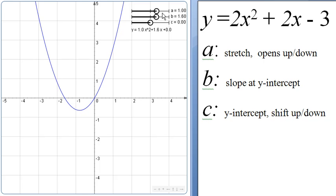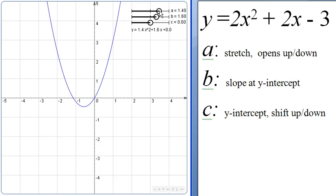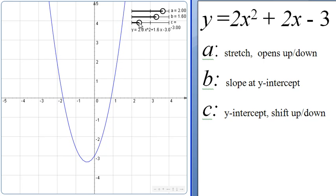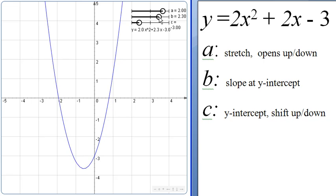What do we know about the shape of that? Well, we know that it's going to open upwards because the a value is 2. We know that the y-intercept is going to be at negative 3 because the value of c is negative 3. And now we know that at the y-intercept, the graph is going to be sloping upwards, like we see here.